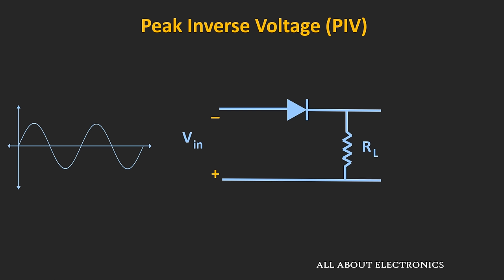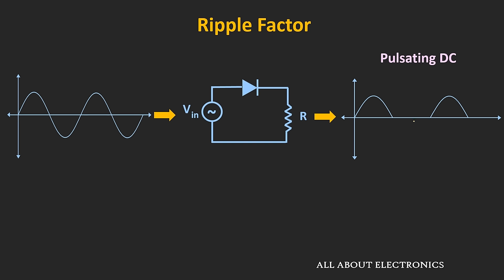The next parameter for the rectifier is the peak inverse voltage (PIV). It defines the maximum reverse voltage which appears across the diode during operation. Here, if Vm is the peak amplitude of the applied sine wave, then during the negative half cycle the maximum voltage which appears across the diode in the reverse condition will be equal to minus Vm. So the peak inverse voltage for this half wave rectifier will be equal to Vm. Whenever you are selecting the diode for the rectifier, you should check the PIV rating of the diode, and the peak amplitude of the applied input voltage should be less than this PIV rating.